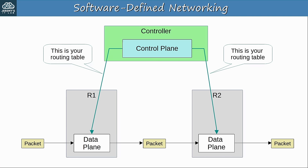Quiz question 1: Which of the following are benefits of network automation? Select 2. The answers are A, reduced human error, and B, reduced OPEX. Because automation means network engineers don't have to spend so much time inputting commands into the CLI, human error such as typos can be reduced. Tasks can also be achieved in a much shorter period of time, which reduces the OPEX — operating expenses — of the network.